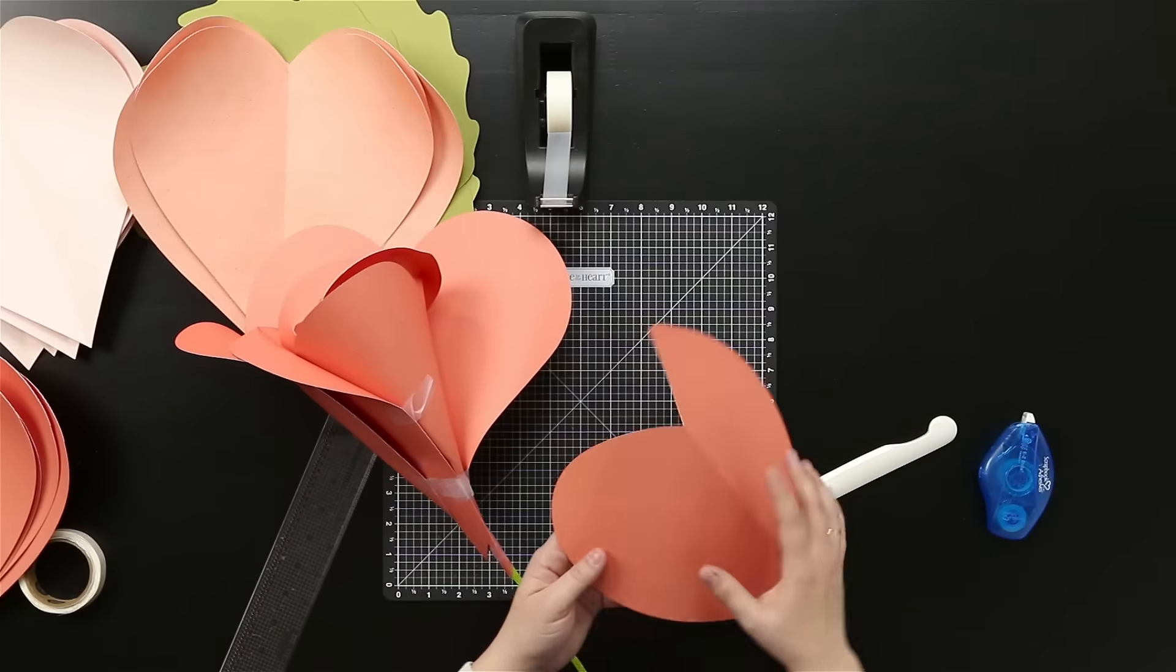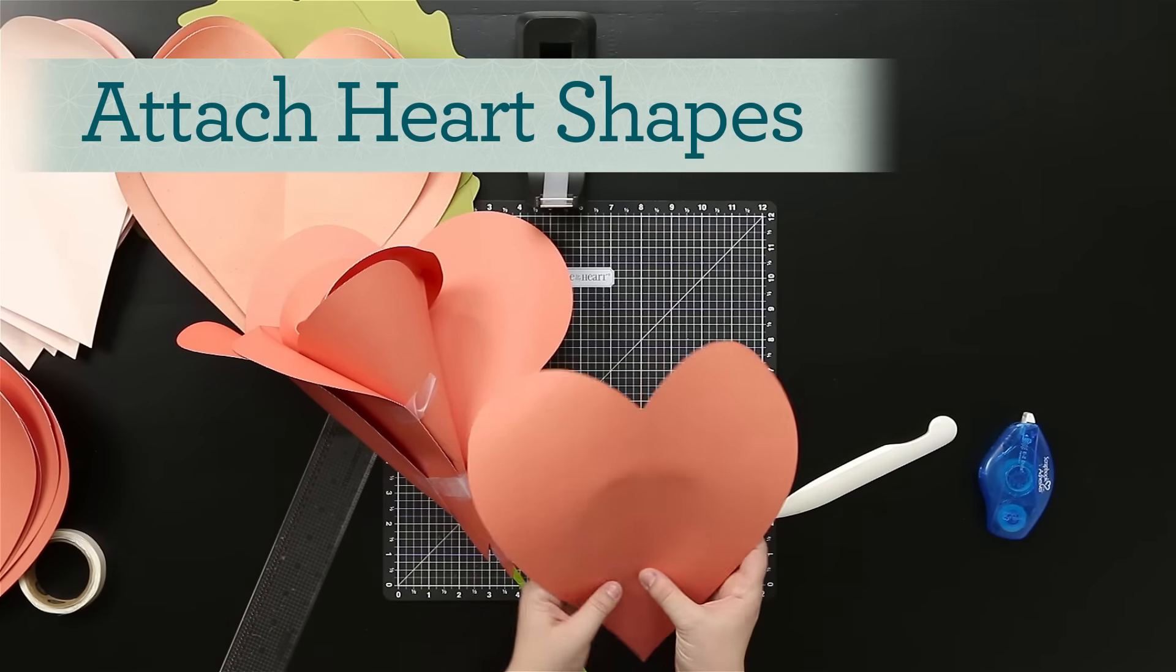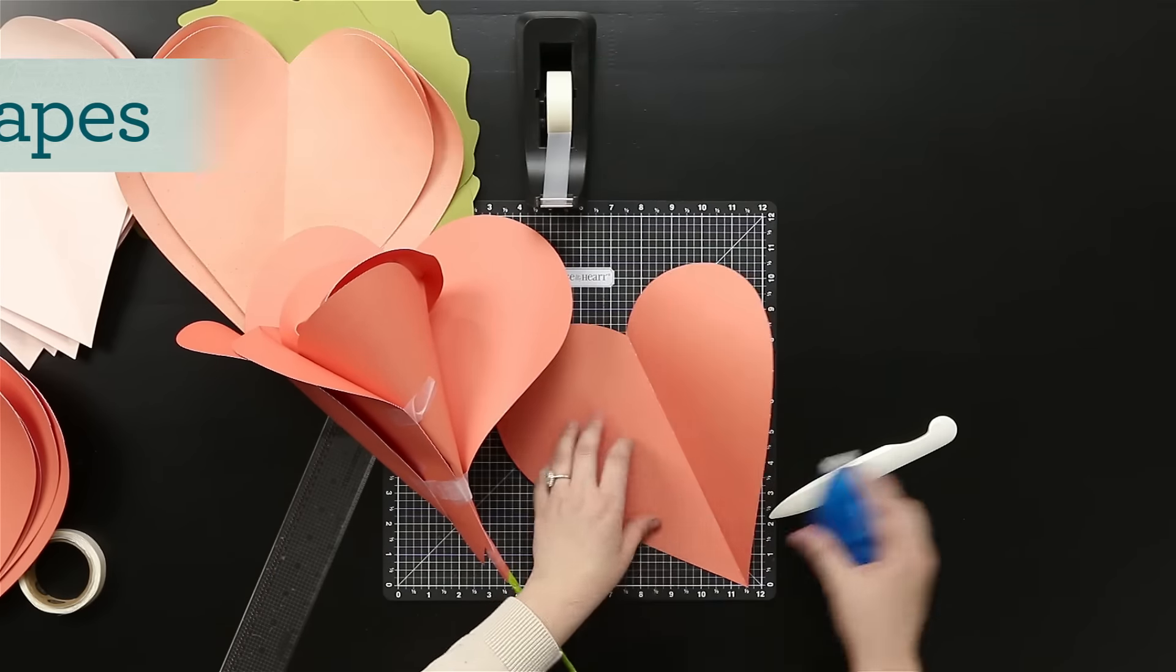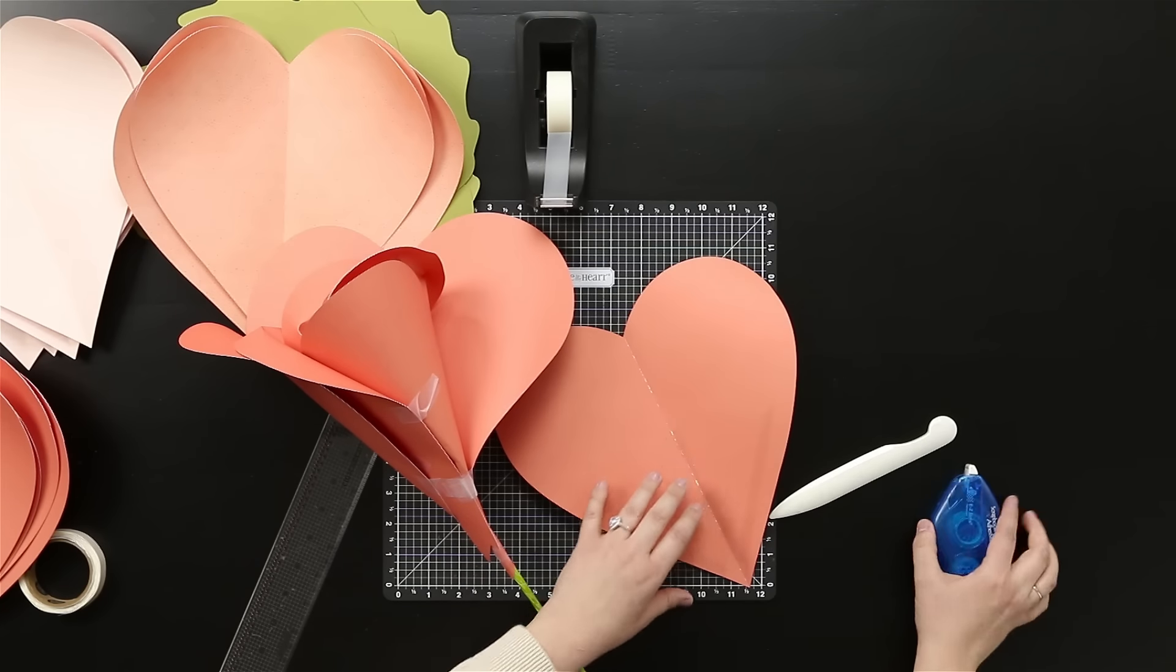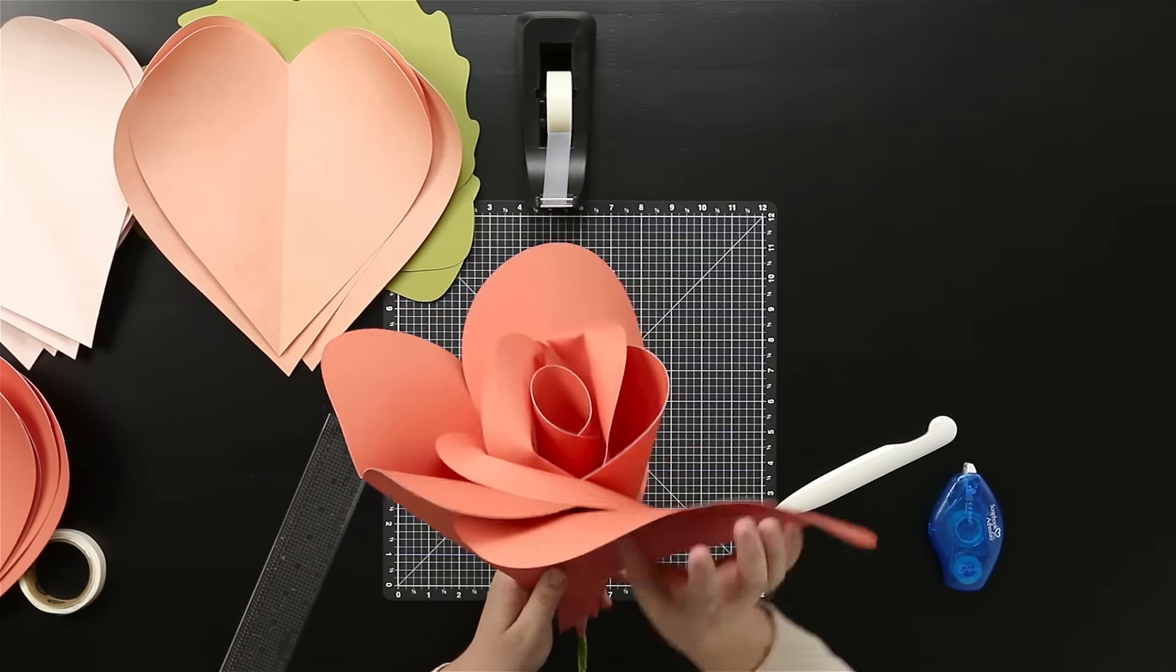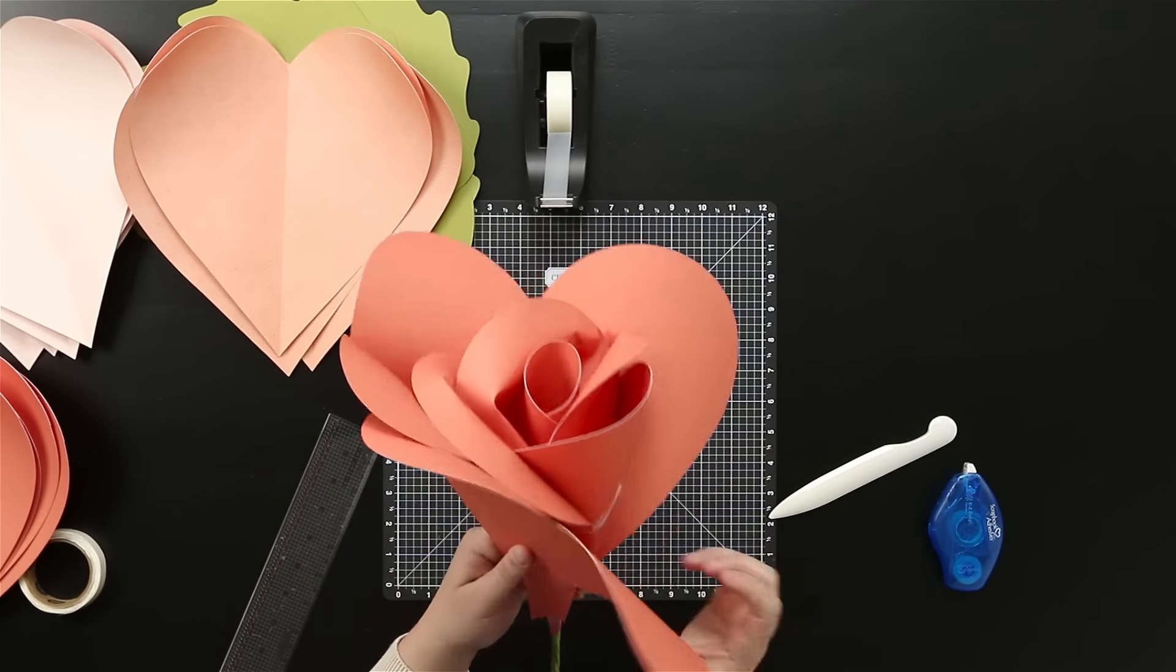You're just layering and layering on top of it. So once we've done all the droplet shapes, we're going to get the heart shape and that's going to give it the real shape of the flower that we're looking for. So I'm using my scrapbook adhesive on this one. And again, you're just securing it with your hand as you're putting it there.